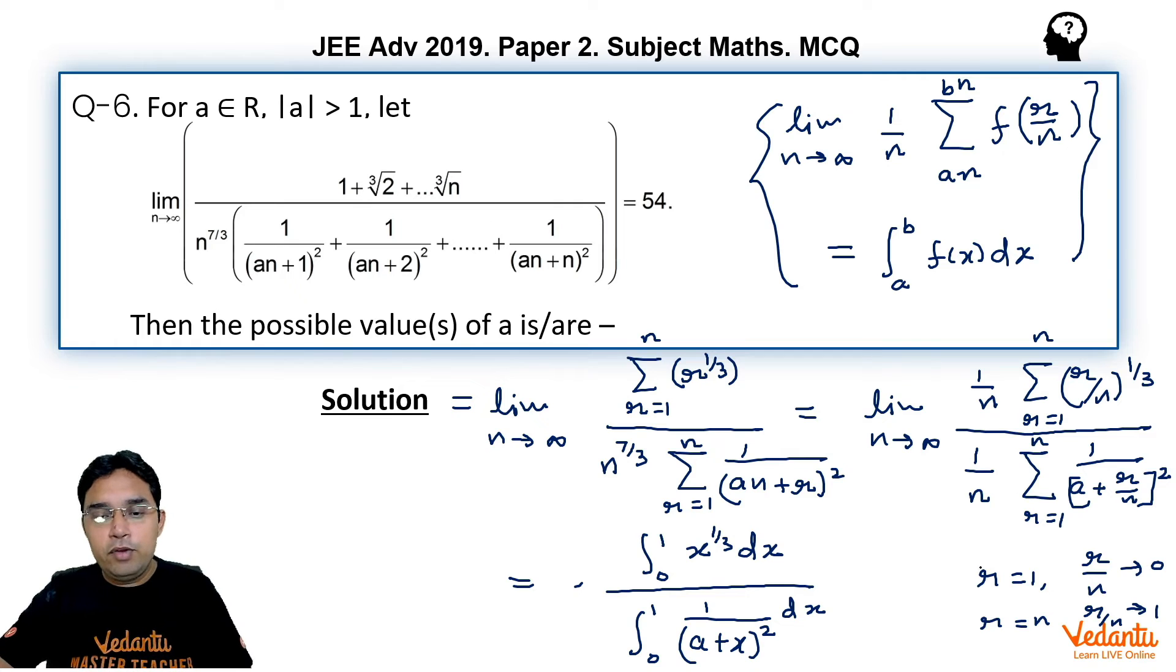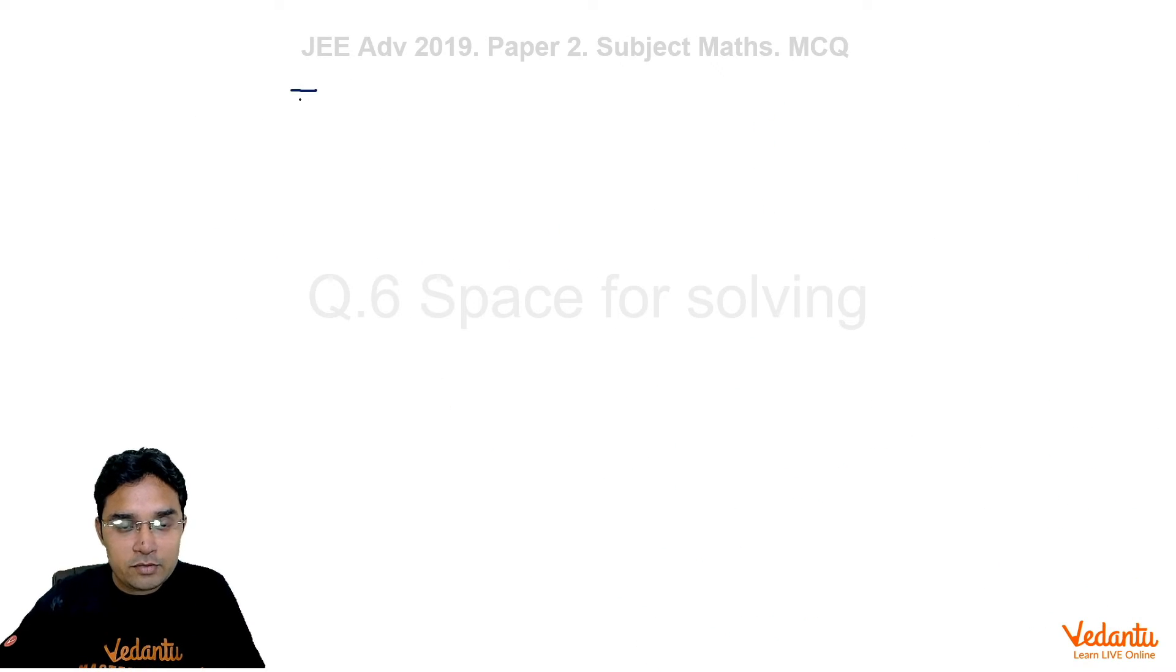So I think from there we can write it directly now this integration of numerator is very easy to solve x raised to the power 4/3 upon 4/3 divided by this will be minus 1 upon (a + x). Limits for both of them numerator and denominators they are 0 to 1, 0 to 1.